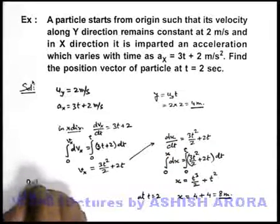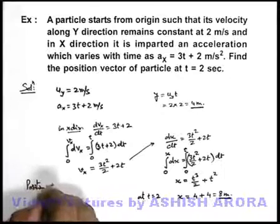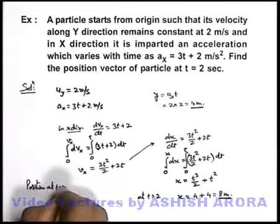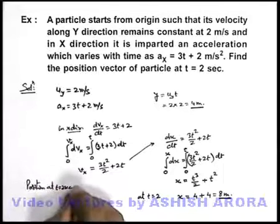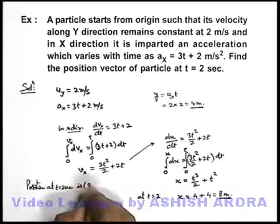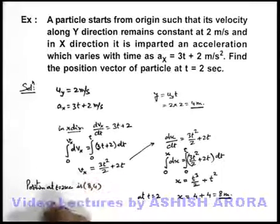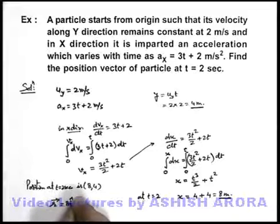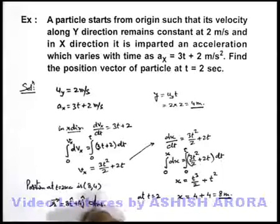So if we calculate position of particle at t equal to 2 second, we can simply state this position is 8 comma 4. Or position vector if you wish you can write it 8i cap + 4j cap, that is the answer to this question.